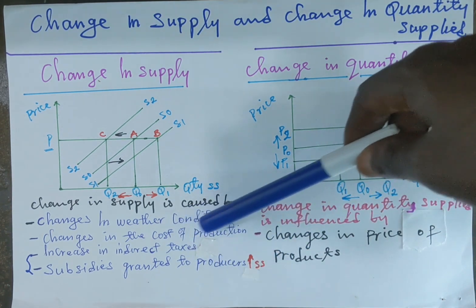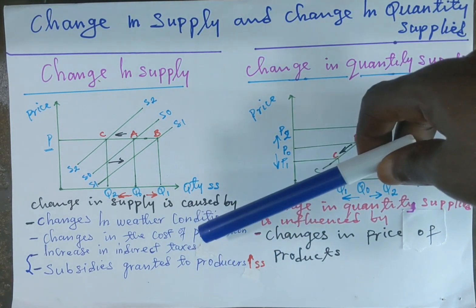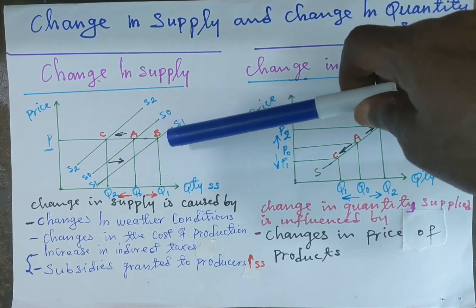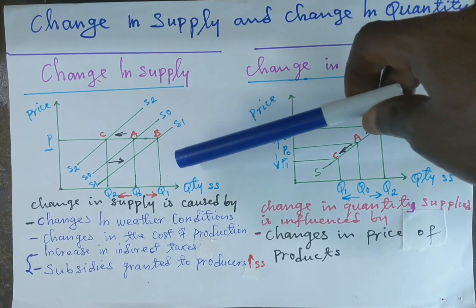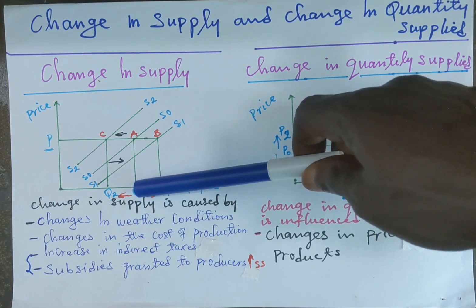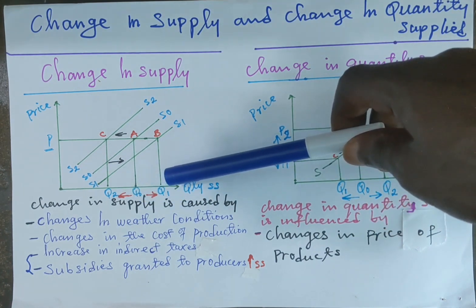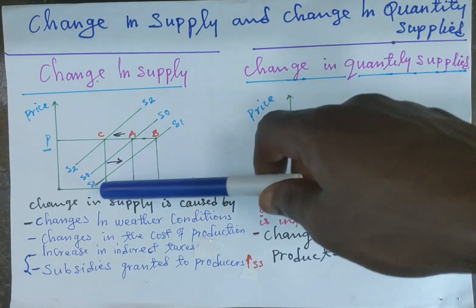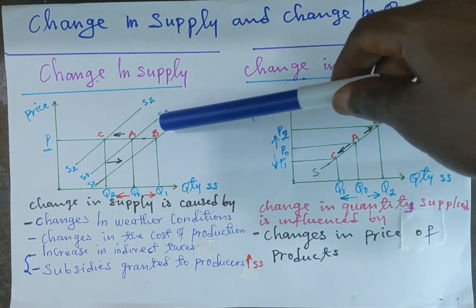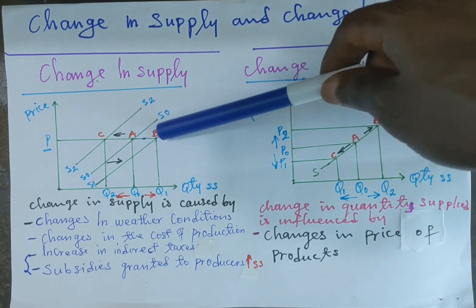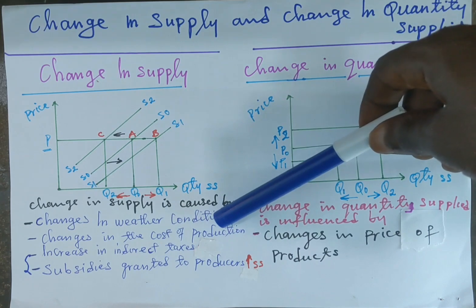Let's start with the first point about changes in weather conditions. Weather conditions mostly affect the supply of agricultural products. During good weather conditions, the supply of agricultural products will increase, so this increases supply from Q0 to Q1, causing the supply curve to shift completely from SS0 to SS1. This complete movement is shown on the graph where the curve shifts from point A to point B.